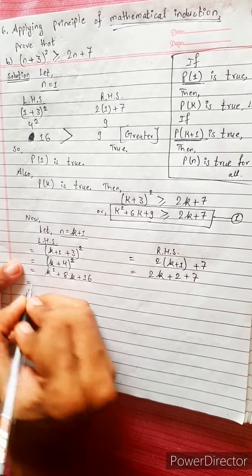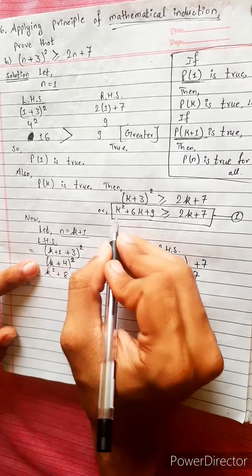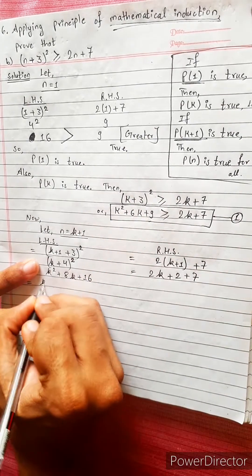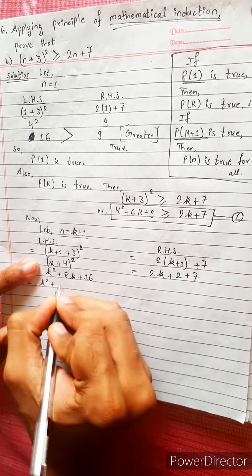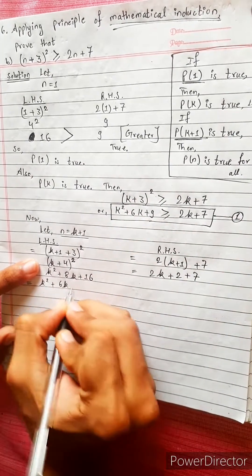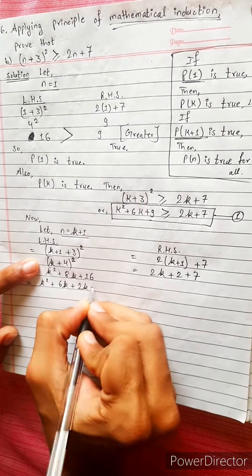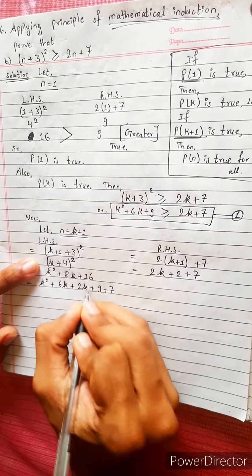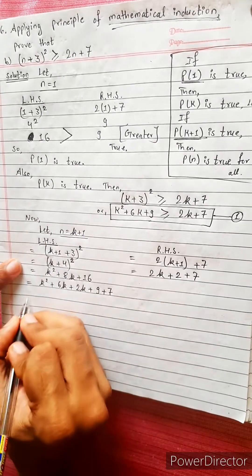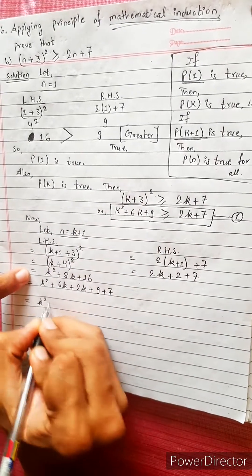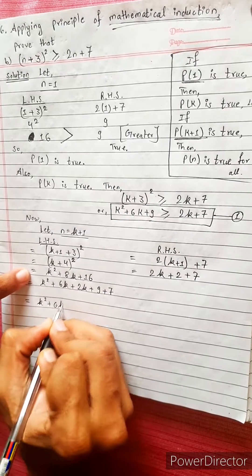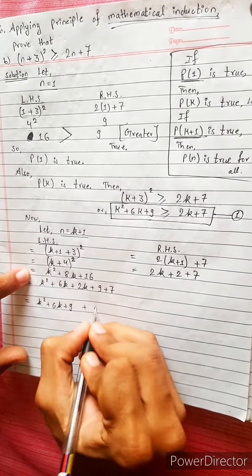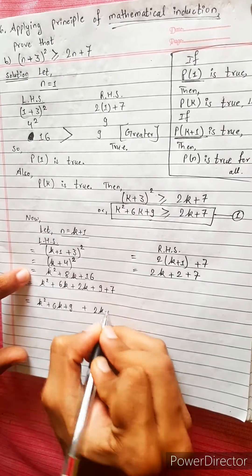Expanding: k squared plus 6k plus 9. Then k squared plus 6k plus 2k plus 9 plus 7. Since 9 plus 7 is 16, we get the line k squared plus 8k plus 16, which equals k squared plus 6k plus 9 plus 2k plus 7.